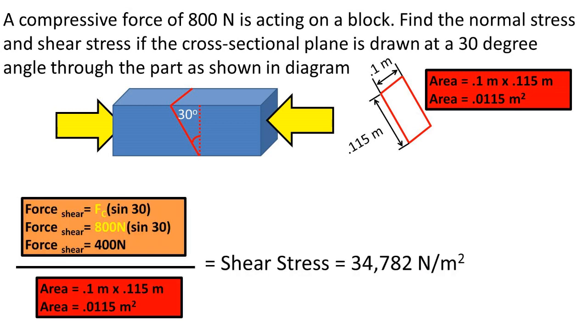Now we can take the shear force we found over the area of the plane to get the shear stress. In this case, we have a shear stress of 34,782 newtons per meter squared.